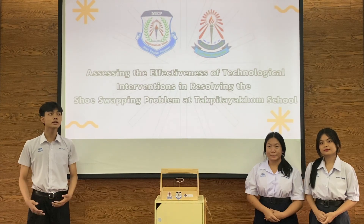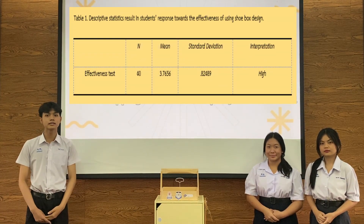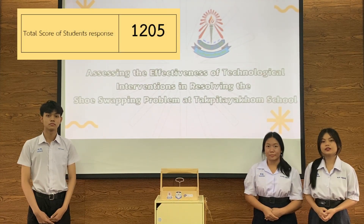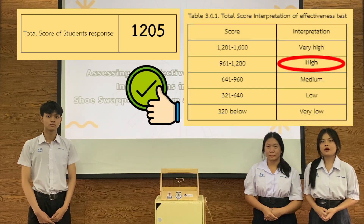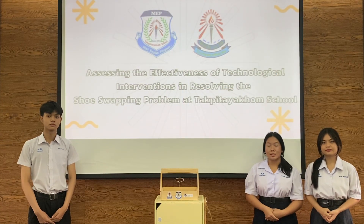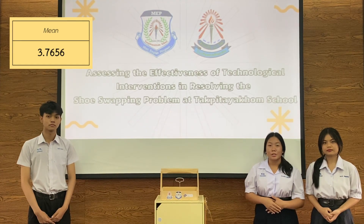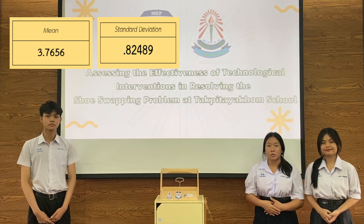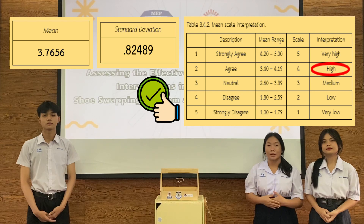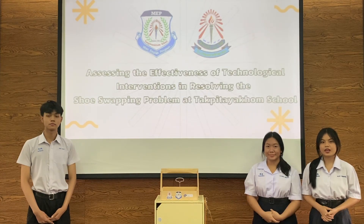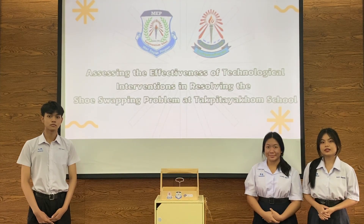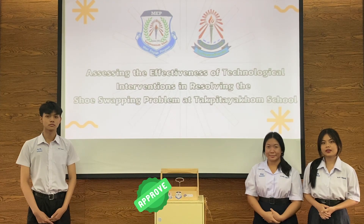Looking at Table 1, it proved that children resulted in a total score of 1205 in the high range score of interpretation. Additionally, descriptive statistics show a mean of 3.7656 and standard deviation of 0.82489, resulting in the high range of the score interpretation. The student's response and statistical analysis both yielded convincing results, with an overall positive response from students.